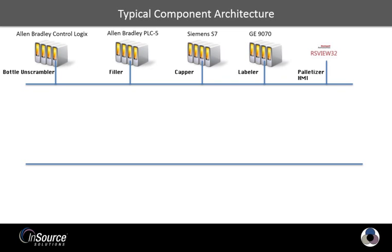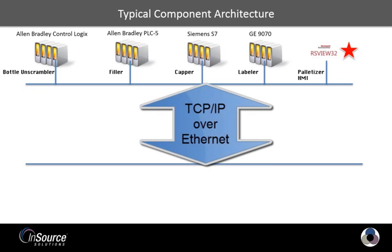As you can see there are several PLC vendors, including the Allen Bradley ControlLogix on the bottle and scrambler. The filler has an Allen Bradley PLC5. The capper is being controlled by a Siemens S7. The labeler is using a GE 9070. The palletizer has a PLC and has also been provided with a Rockwell RSView32 application. In this example it is assumed all PLCs are using proprietary TCP/IP based protocols running on Ethernet.